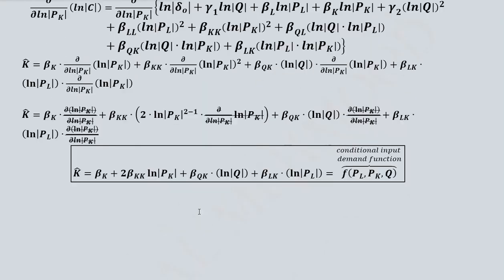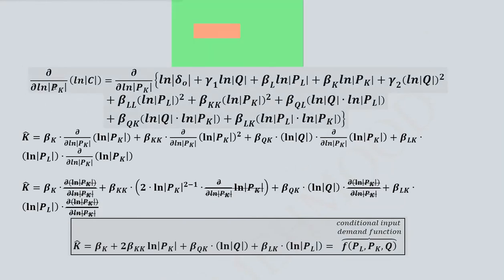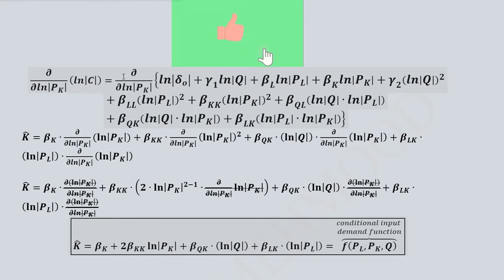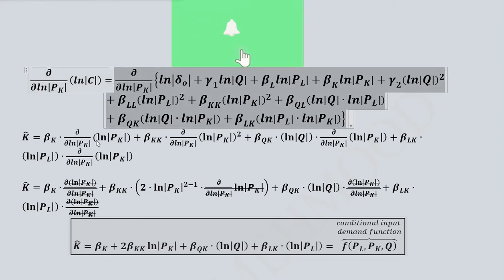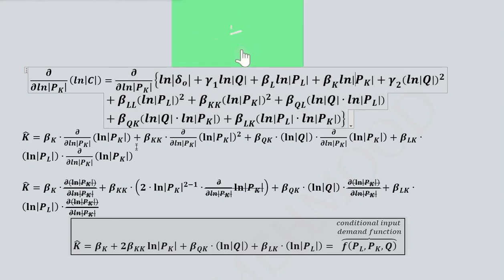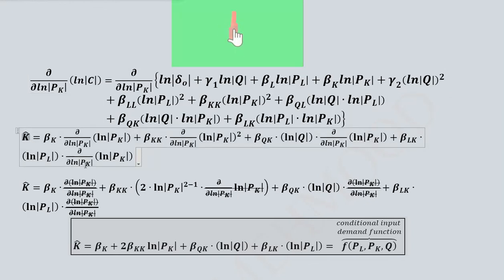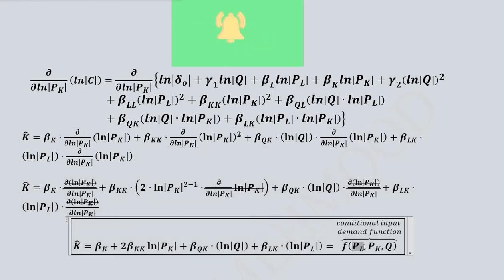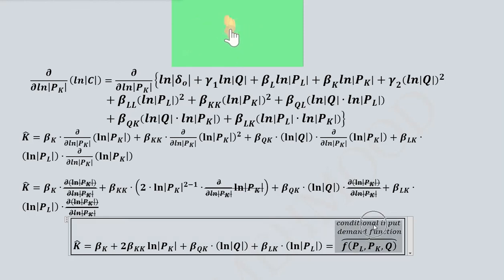Similarly we can derive the conditional input demand function for capital by differentiating logarithmically with respect to the price of capital. Only terms containing p_K will be entertained — that is, the relevant terms shown on screen. You can pause the video and follow the same steps used for labor. After simplification, the conditional input demand function for capital is a function of the price of labor, the price of capital, and output. Due to the presence of output, it is again called the conditional input demand function.